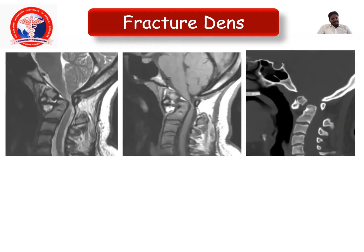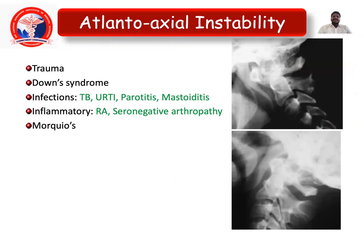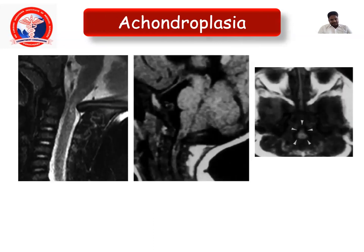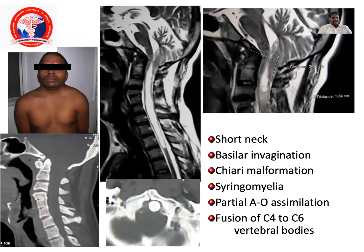Atlanto-axial instability can be caused by trauma, Down syndrome, infections such as tuberculosis, parotitis, mastoiditis, or upper respiratory tract infections. Inflammatory causes include rheumatoid arthritis, seronegative arthropathies, or Morquio syndrome in MPS. In achondroplasia, the patient usually presents with short neck, basilar invagination, Chiari malformations, syringomyelia, partial atlanto-occipital assimilation, and fusion of C4 to C6 vertebral bodies.